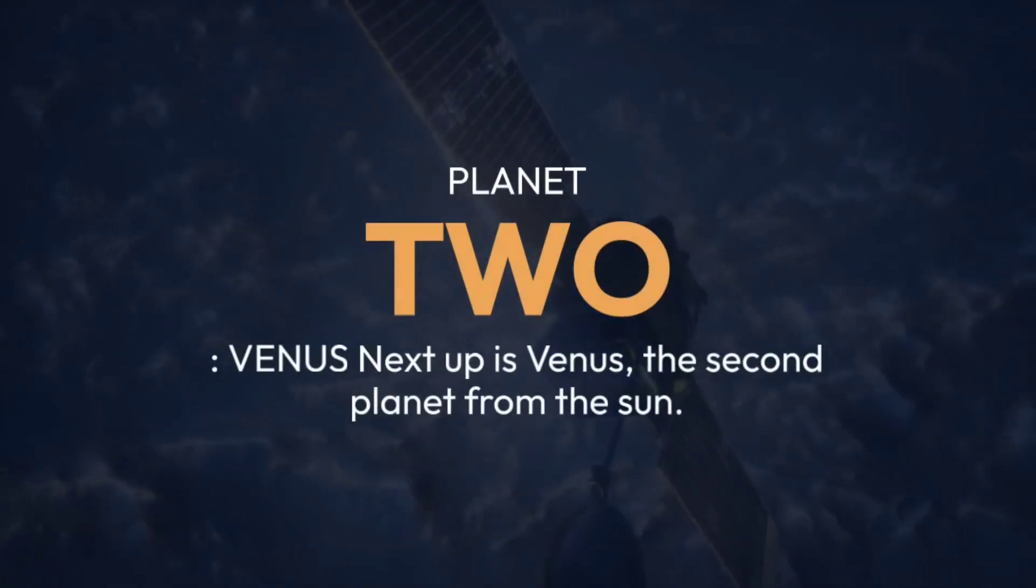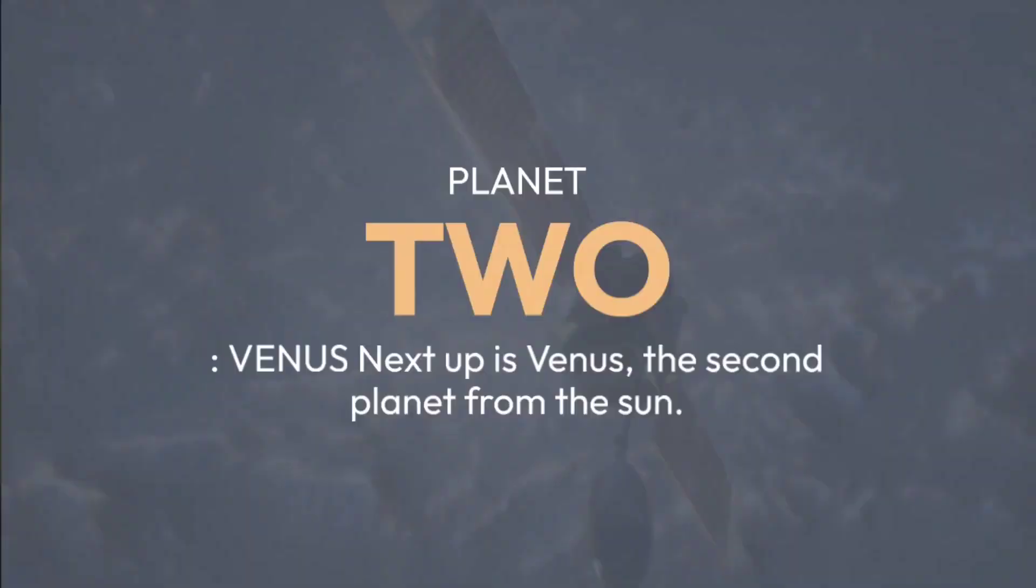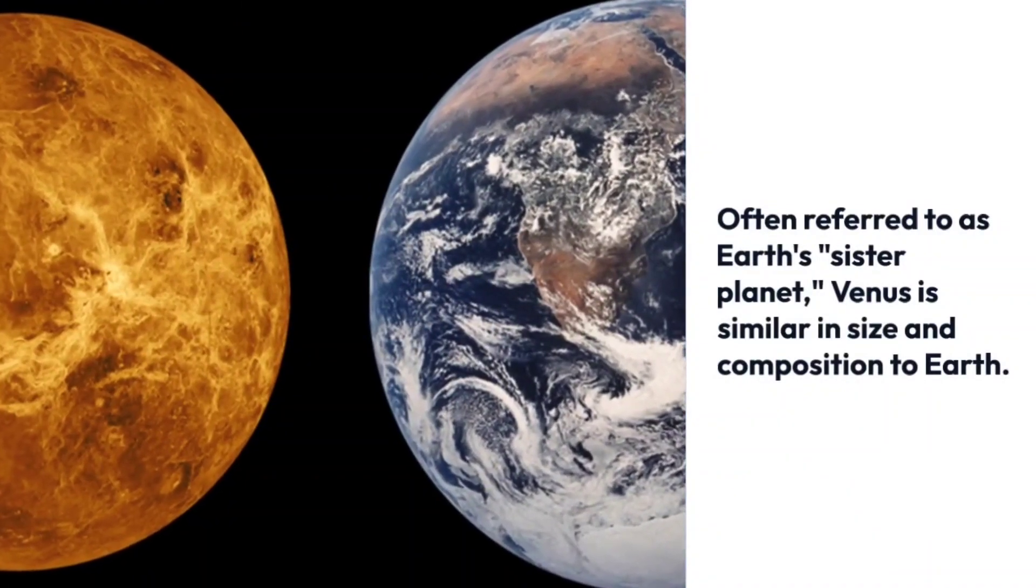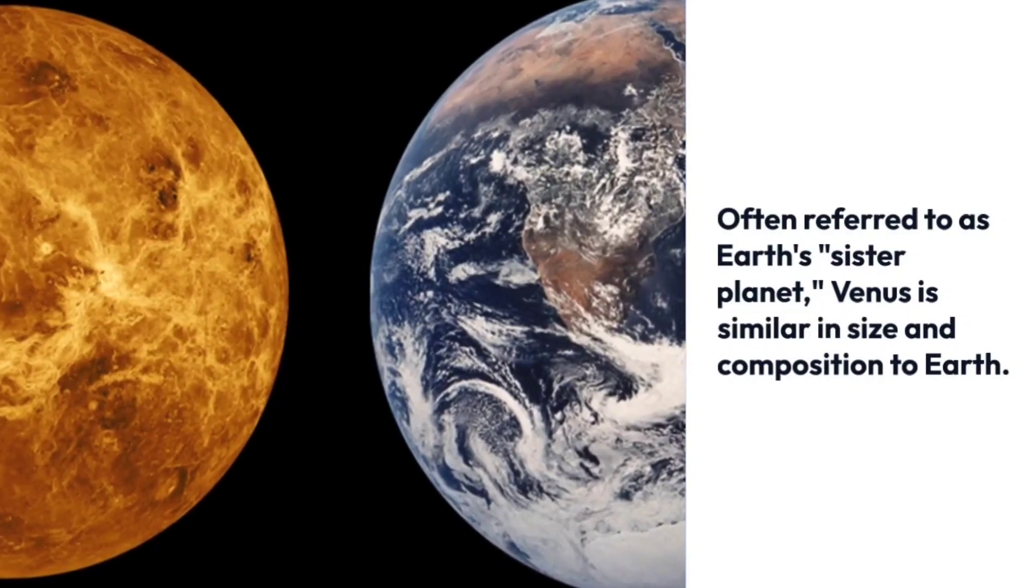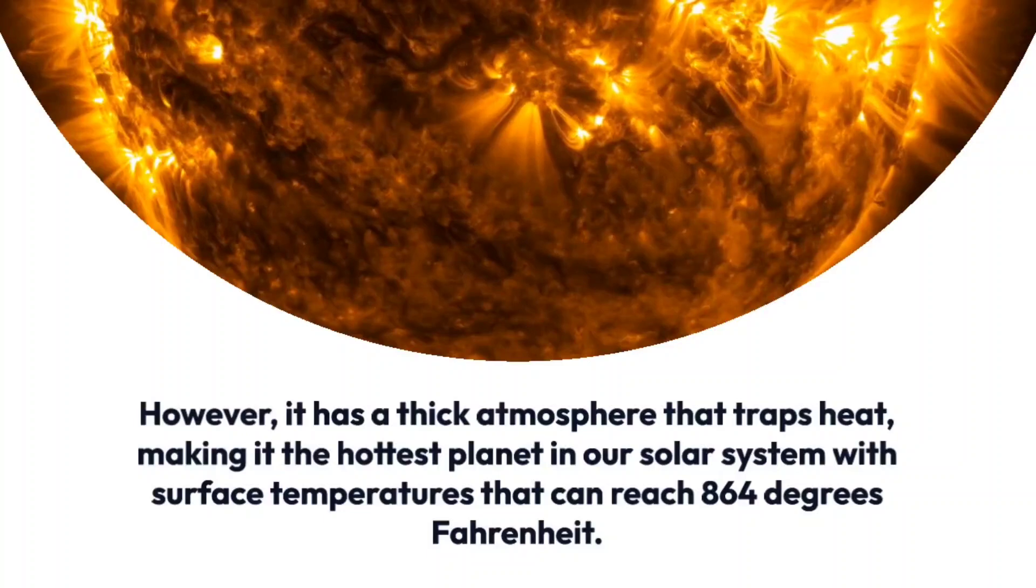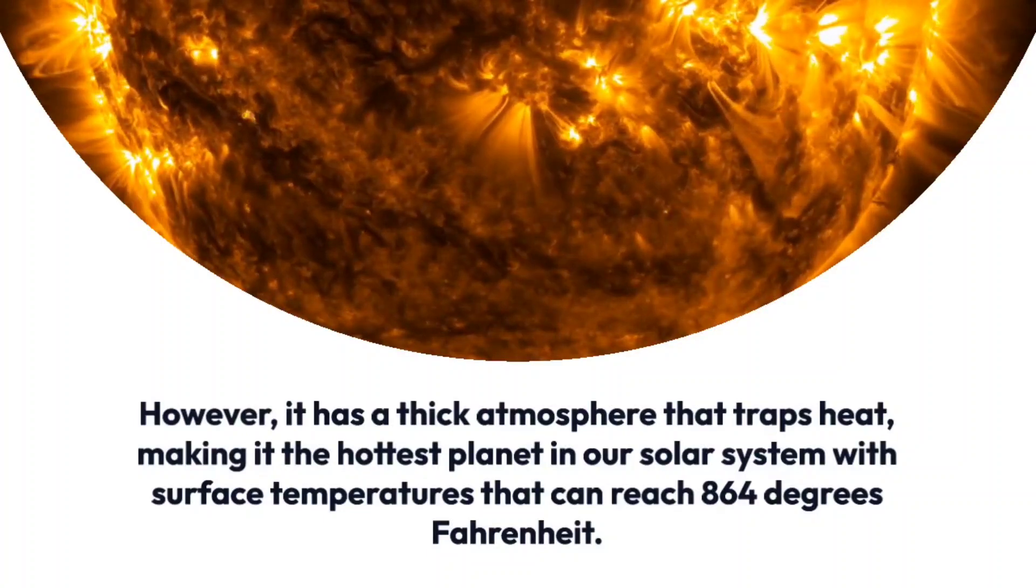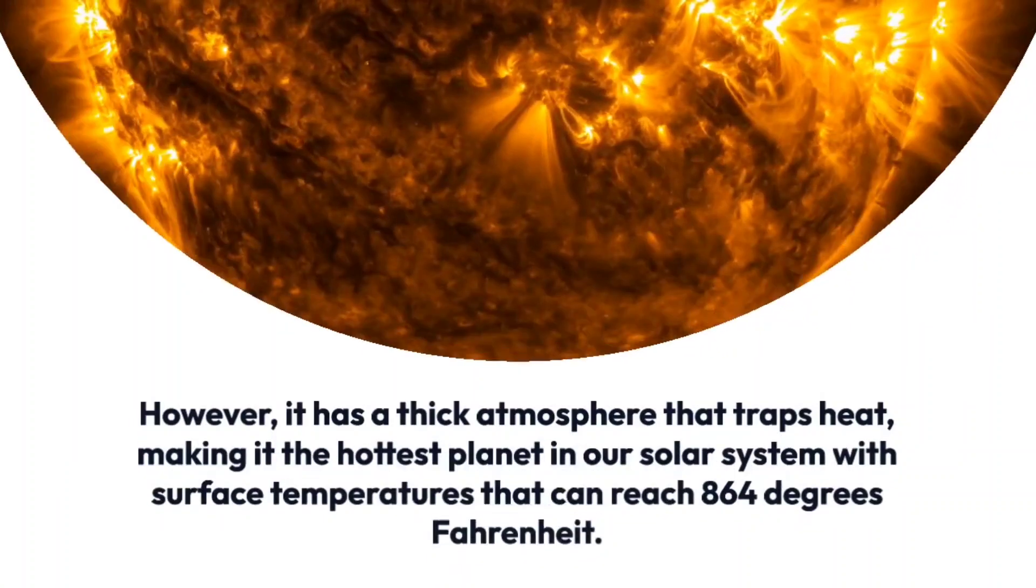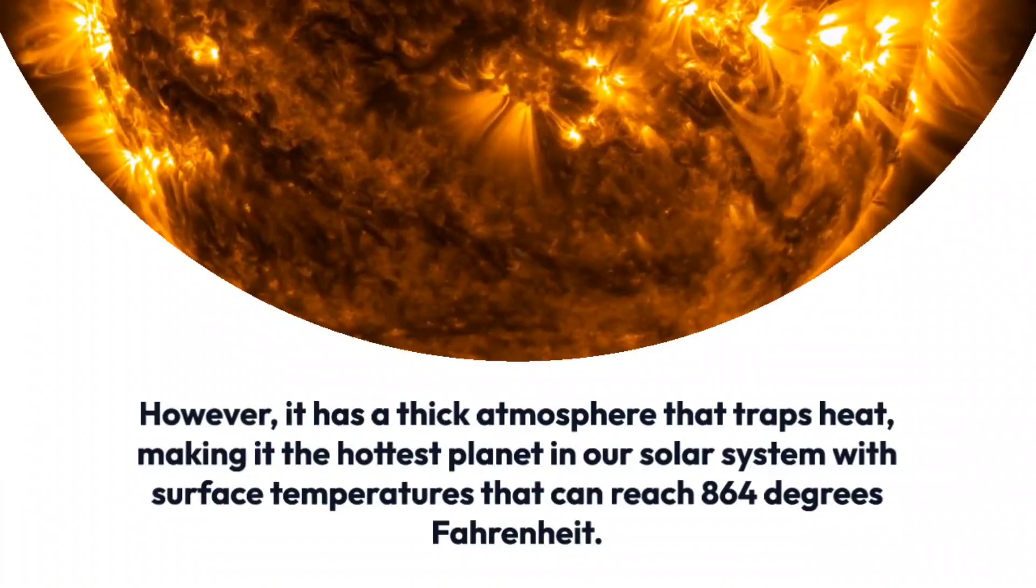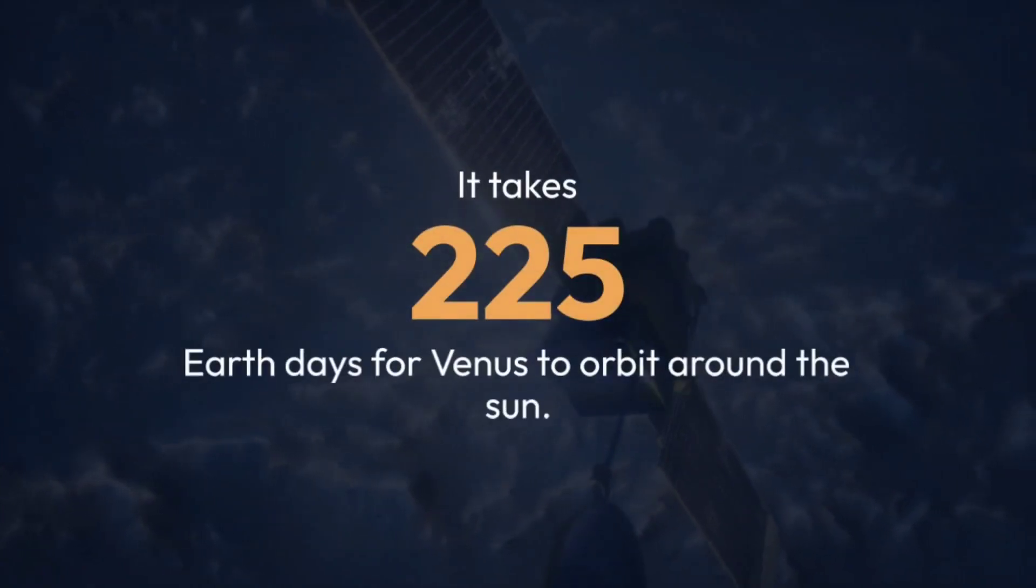Planet 2: Venus. Next up is Venus, the second planet from the sun. Often referred to as Earth's sister planet, Venus is similar in size and composition to Earth. However, it has a thick atmosphere that traps heat, making it the hottest planet in our solar system with surface temperatures that can reach 864 degrees Fahrenheit. It takes 225 Earth days for Venus to orbit around the sun.